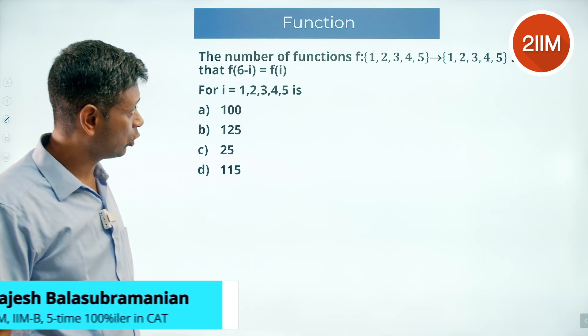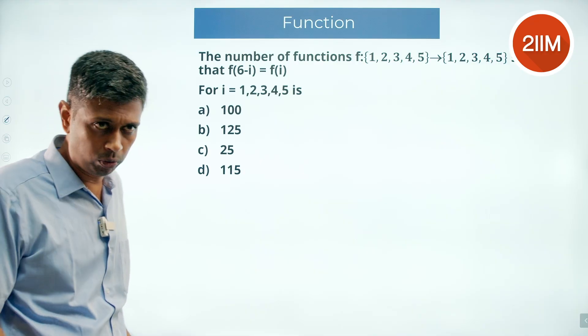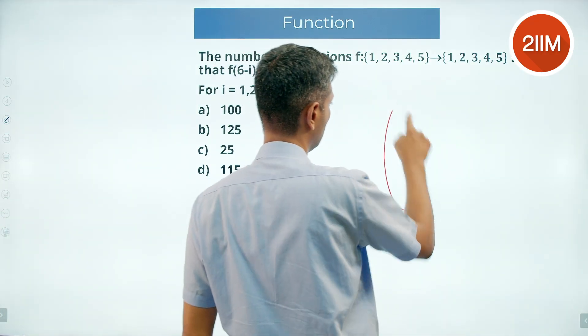The number of functions f of 1, 2, 3, 4, 5 to 1, 2, 3, 4, 5 such that f of 6 minus i is equal to f of i. We have 1,